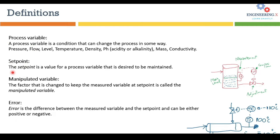The setpoint is the value for a process variable that is desired to be maintained. For example, if I want the water level inside the tank to be maintained at 50%, then 50% is the setpoint and the level is the process variable.